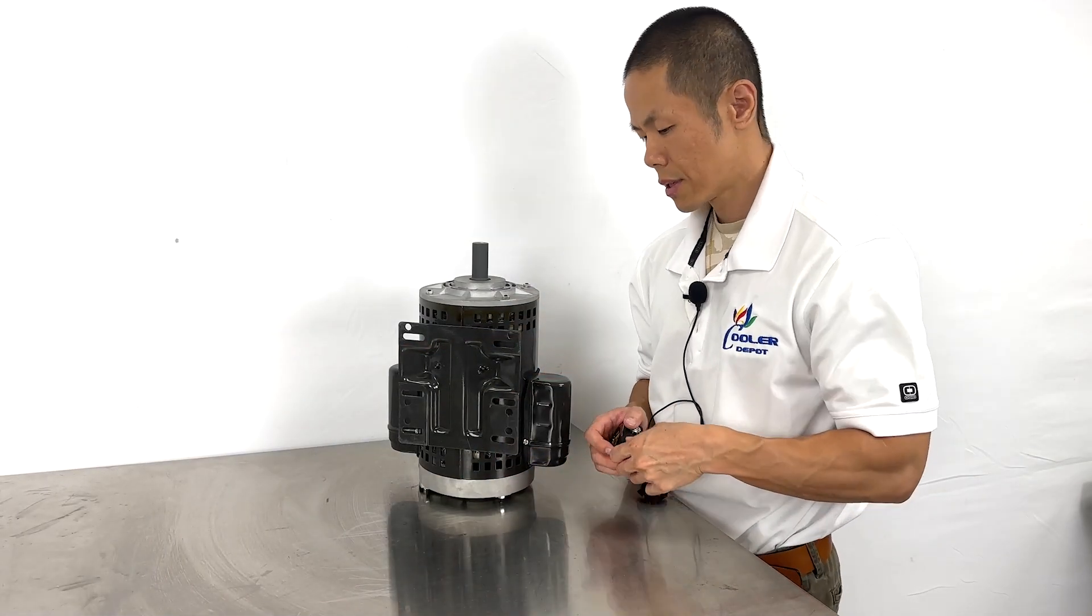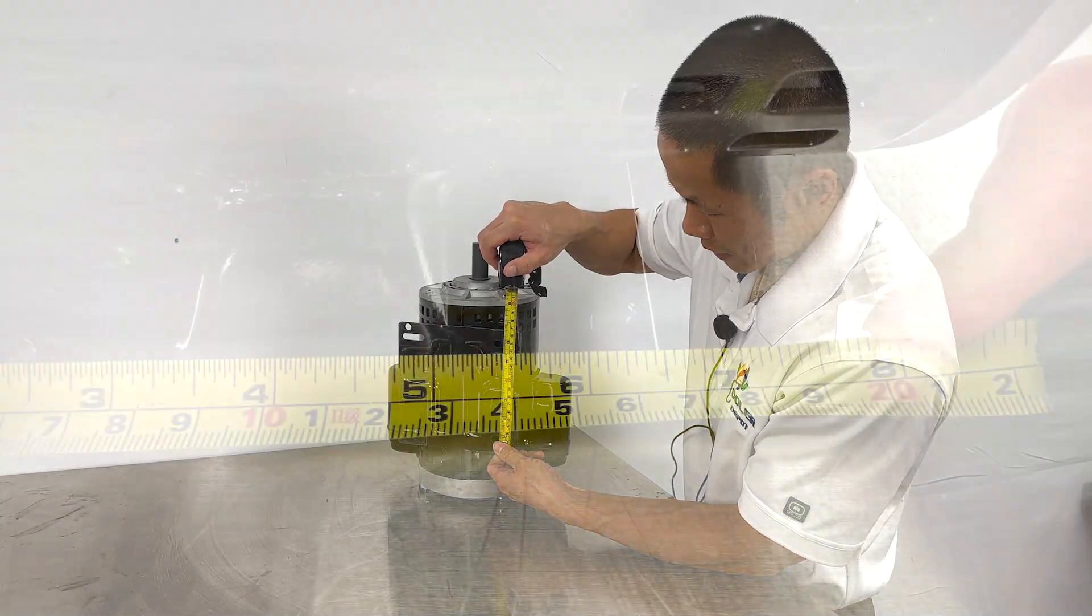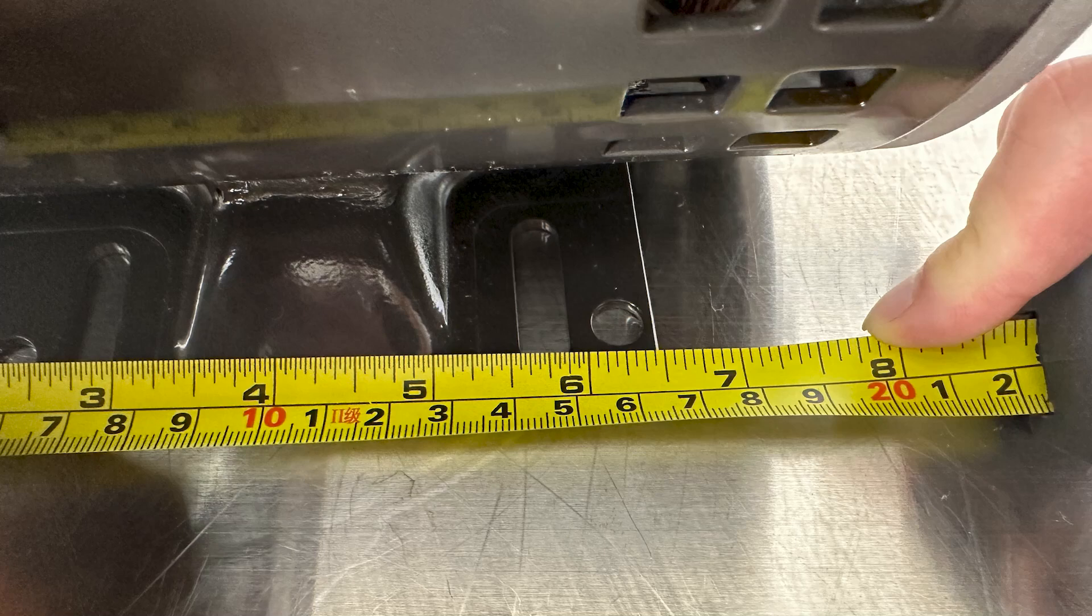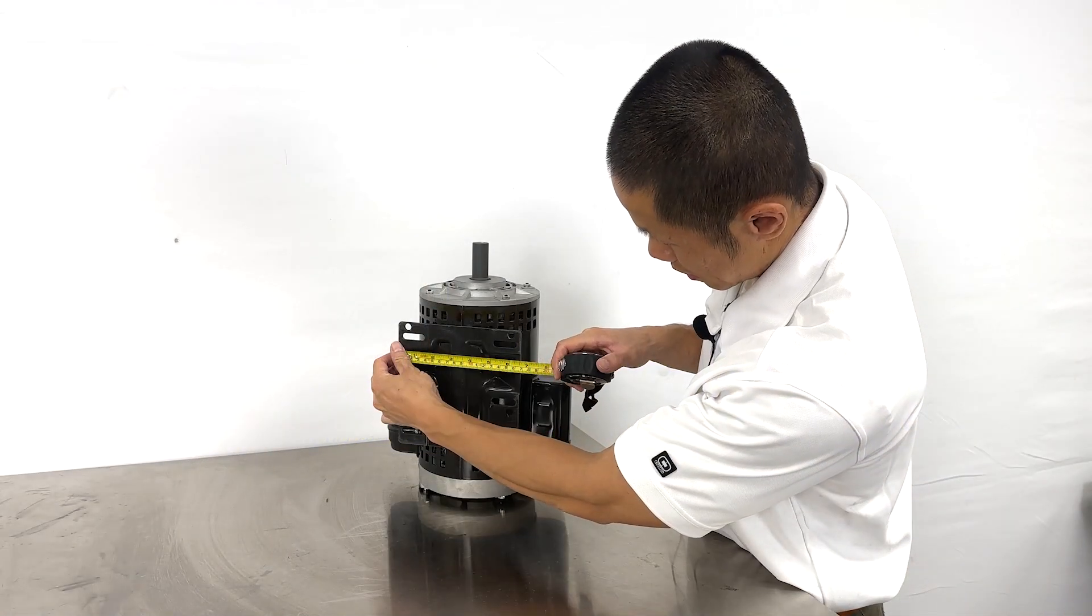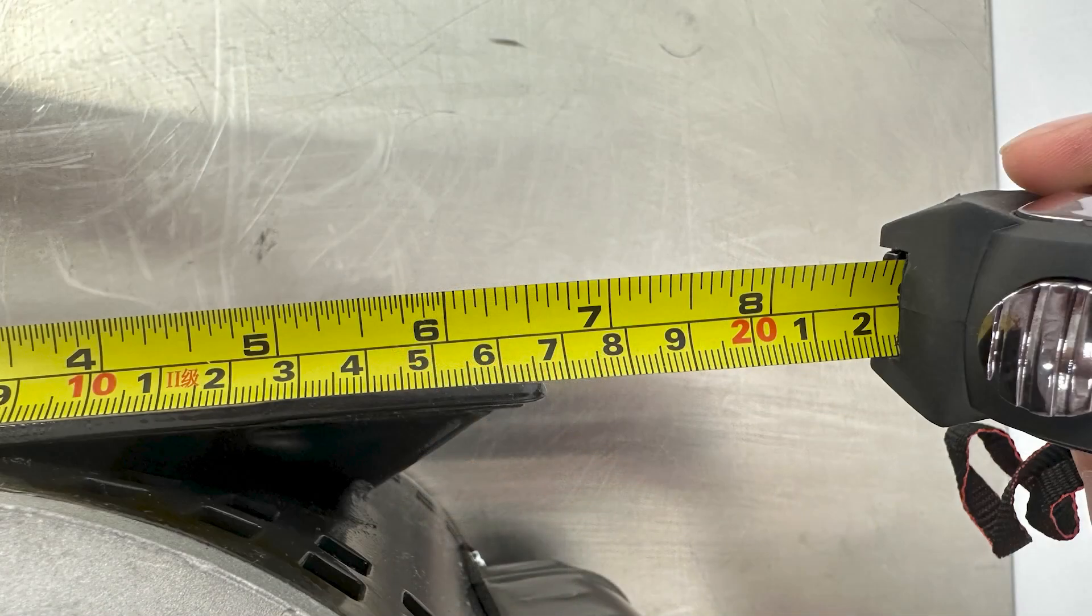Measurements for the bottom mount. We have six and a half inches in depth, but also six and a half inches in length.